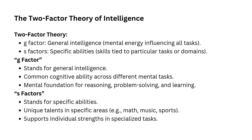Spearman's two-factor theory proposes that intelligence is made up of two distinct factors: general intelligence and specific abilities. Spearman believed that every individual has a G-factor — the G stands for general intelligence. This is like the brain's core engine, the mental energy or power that influences how we perform across a variety of tasks, from solving puzzles to understanding complex ideas. The G-factor is called general because it applies to every type of mental activity. It gives us the ability to reason, solve problems, and think logically. In simpler terms, it is the mental foundation that supports all kinds of learning and thinking.